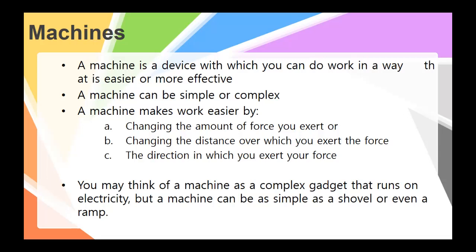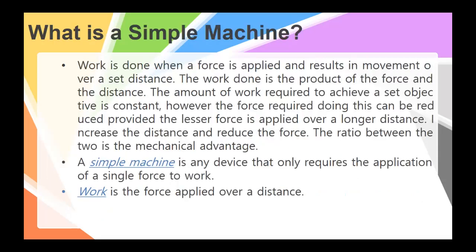So you typically probably think of machines as a very complex gadget running on electricity but a machine is as simple as a shovel or even a ramp that you walk up to to get to a door. By definition when work is done with a force applied and the result movement over a set distance the work done is the product of the force times the distance, that's our equation that we already gave you and the amount of work required to achieve a set objective is constant.